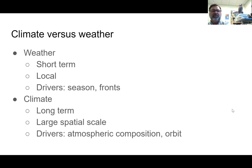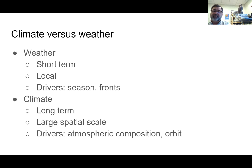First, some basics. Let's talk about the difference between climate and weather. Weather refers to the short-term changes you see on a daily basis — they tend to be local. The drivers of weather are seasons and fronts. If you want to know if it's going to snow or rain, you just need to know if it's winter and whether a cold or warm front is coming through. Climate is long-term, looks at averages, tends to be large spatial scales — continental scales — and the drivers are things like atmospheric composition and the Earth's orbit.